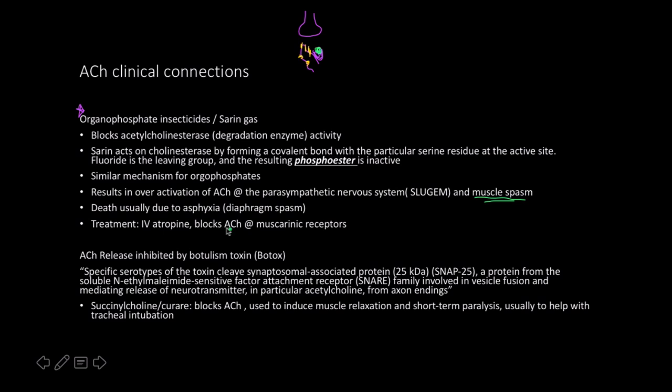Atropine blocks acetylcholine at muscarinic receptors. Another important point: the release of acetylcholine from vesicles is inhibited by botulism toxin, and that's actually what is given in a Botox injection. Botulism toxin is considered the most toxic substance known to man — reportedly one billionth of a gram can kill someone.